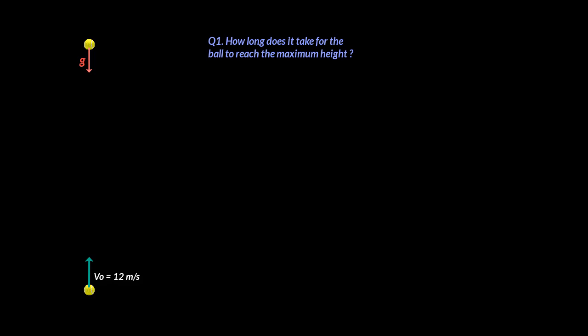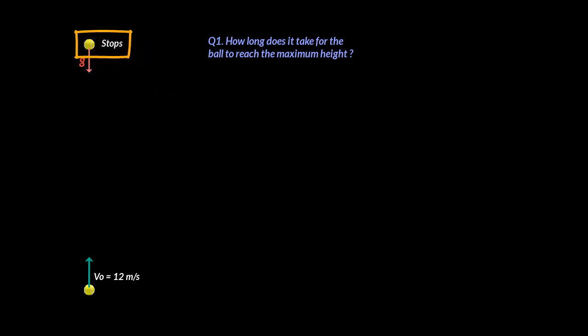Let us visualize what is happening here — imagine yourself throwing the ball up in the air. As the ball rises up, it has to stop at some point. And when it stops, two things happen: one, it has achieved maximum height, and two, its velocity has become zero.